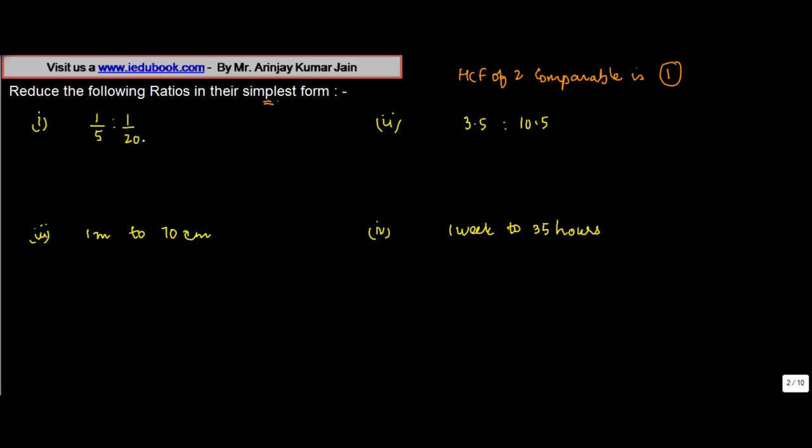Having looked at the first one, what do we have? We have 1 upon 5 is to 1 upon 20. Now, if you take the LCM of these two numbers, 5 and 20, what do you get? It's 20.